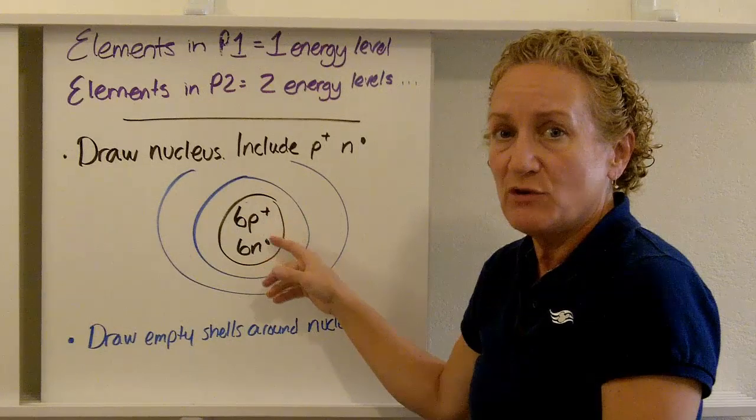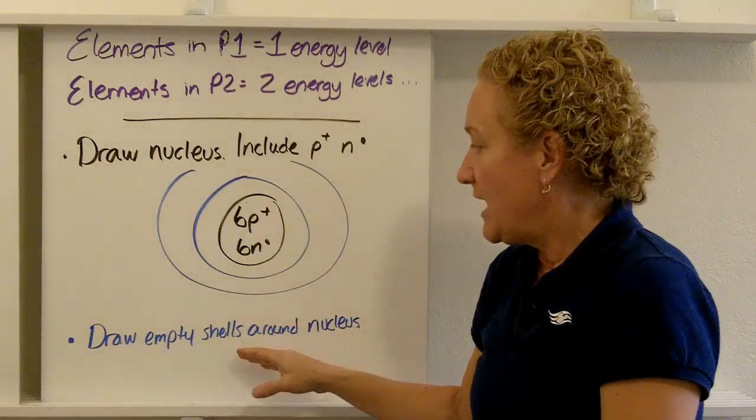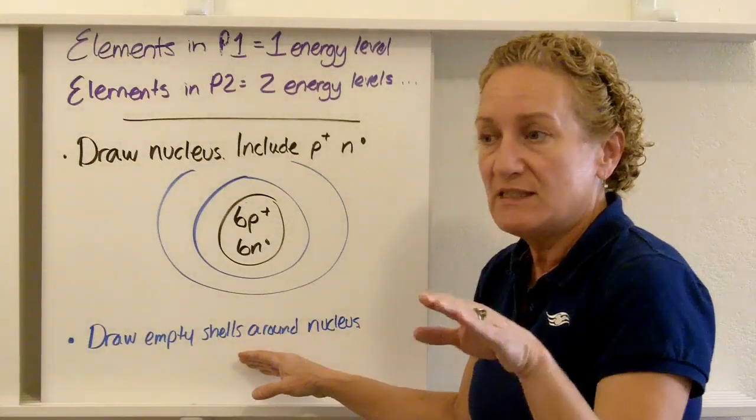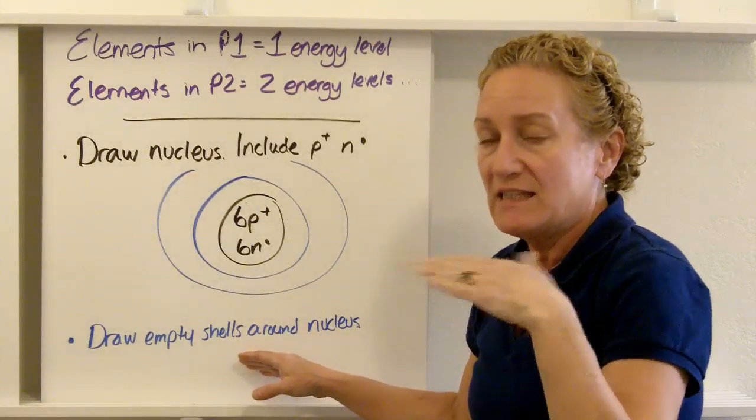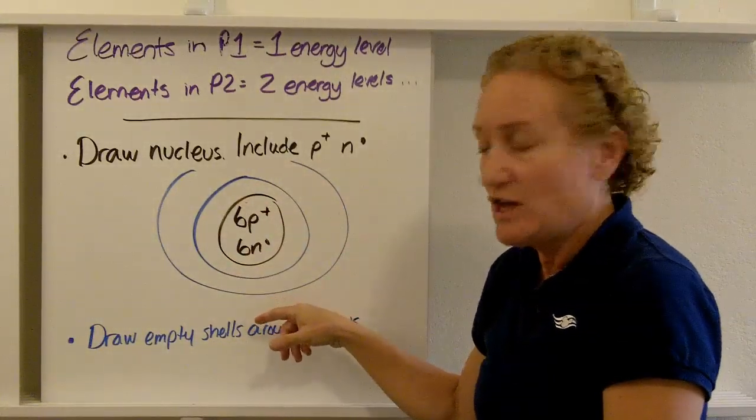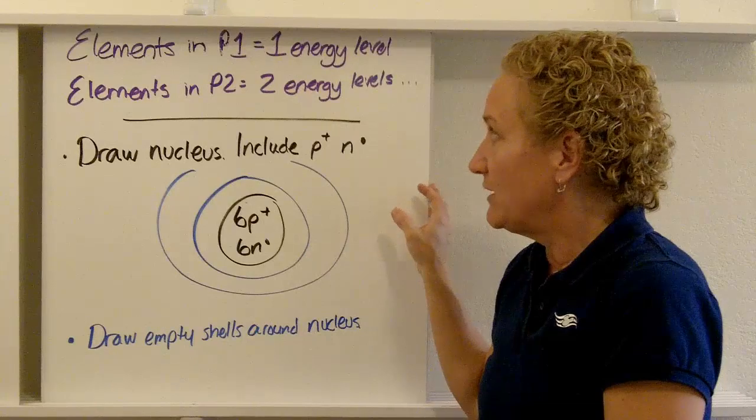In carbon, I have six protons and six neutrons. So I put those in the center and then empty shells around. Now, when I look at the periodic table, I see that carbon is in that second row, the second period. So I drew two blue energy levels or two shells that I'm going to put the electrons in.